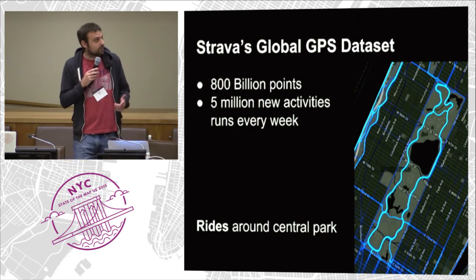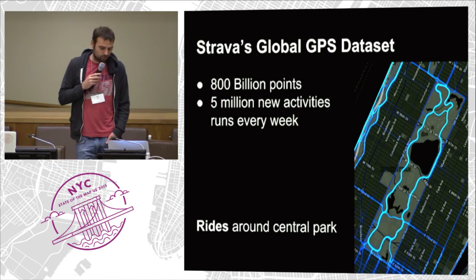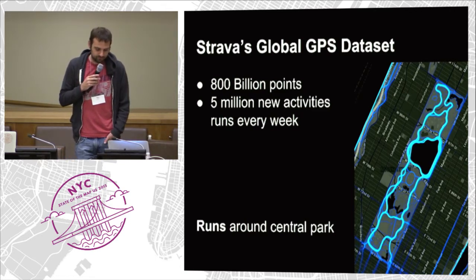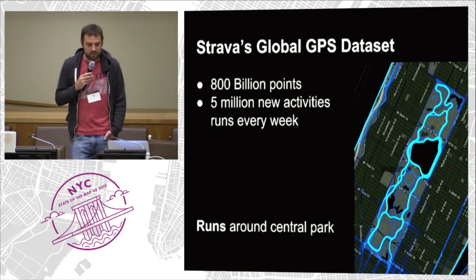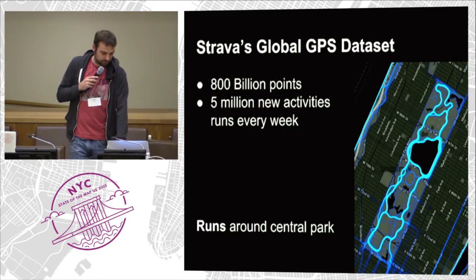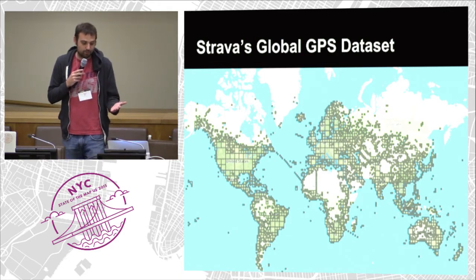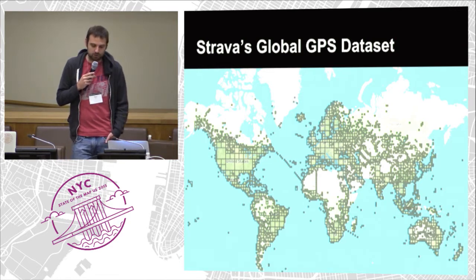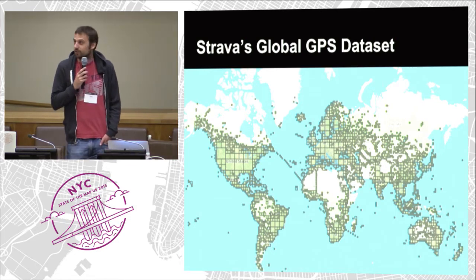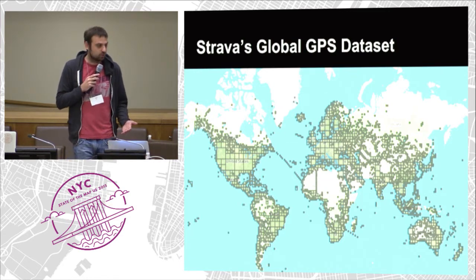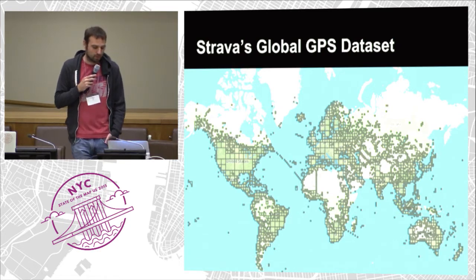The GPS data is the important part. We have about 800 billion points and we get close to 5 million new activities every week, so it's quite an active data set. Here on the side are rides through Central Park — you can see everyone does the loop around the side, and the reservoir loop is really popular for runs. Once mapped, this data set is really rich and has a lot of information in it.